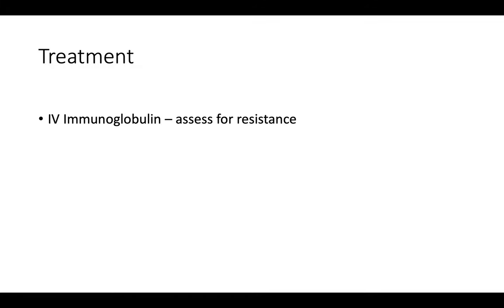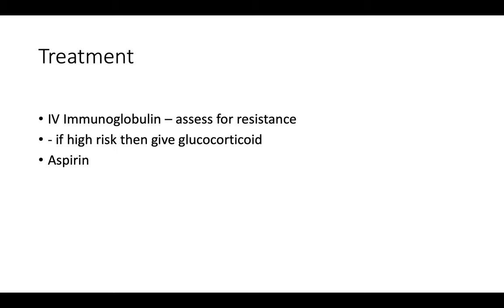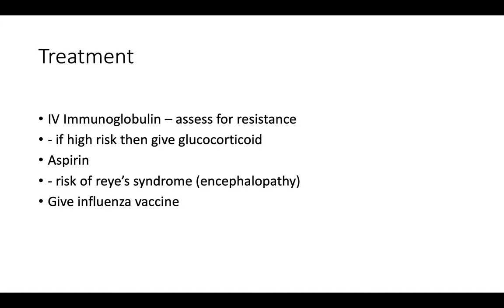Moving on to treatment. This condition is treated with two main things: IV immunoglobulins and aspirin. You need to assess for immunoglobulin resistance using specific criteria, and if the patient is at high risk of resistance, glucocorticoids should be given. Regarding aspirin in a child — this is one of the few conditions where aspirin is given to children. Normally it's avoided due to Reye's syndrome, a complication of aspirin that can cause encephalopathy. It's also important to know that this often occurs after an influenza infection, so an influenza vaccine is recommended to reduce that risk.